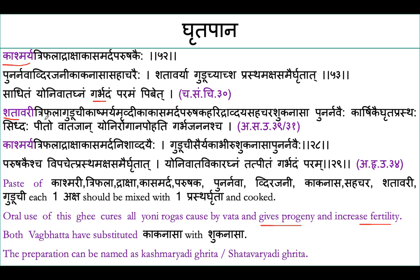This is very useful in Vati ki Yoni Vyapat. The difference between Charak Samhita and Ashtanga Sangra/Hrudaya is that both Vagbhatas substituted Kakanasa drug with Shukanas. In Charak Samhita, Kakanasa drug is mentioned, while in Ashtanga Sangra and Ashtanga Hrudaya, Shukanas drug is mentioned in its place. Otherwise, everything else is the same, and these preparations can be named Kashmariyadi Ghrita and Shatavari Ghrita.